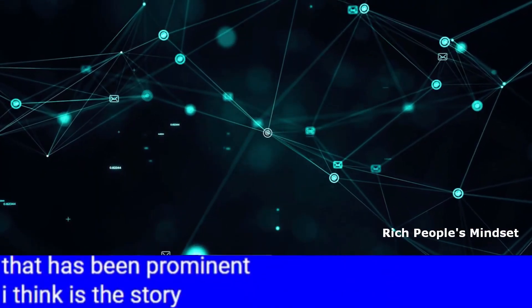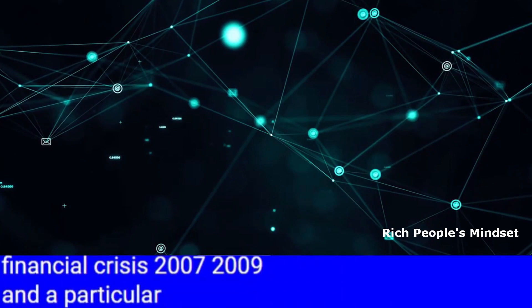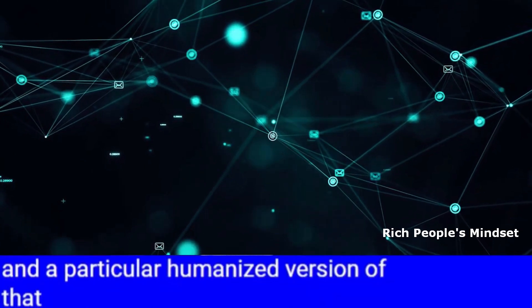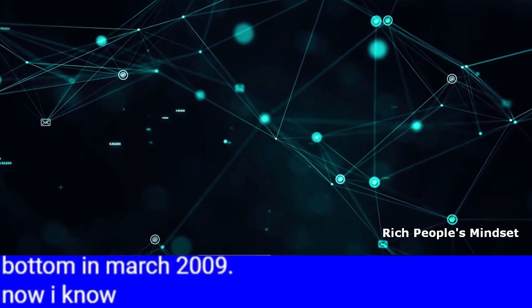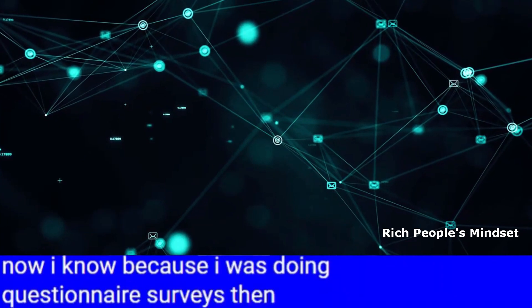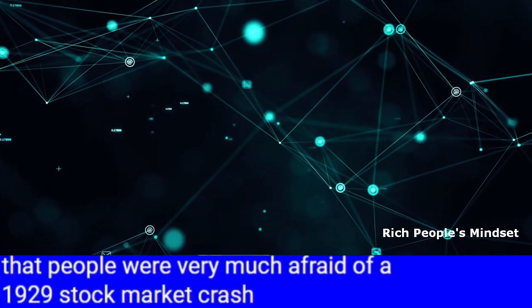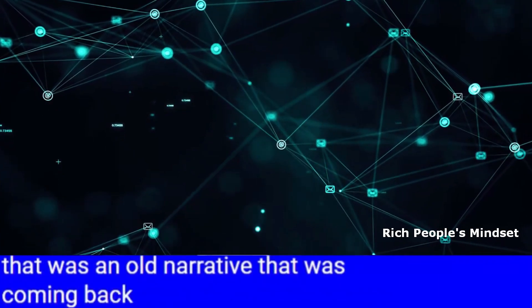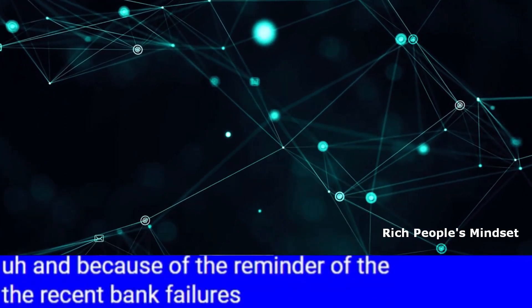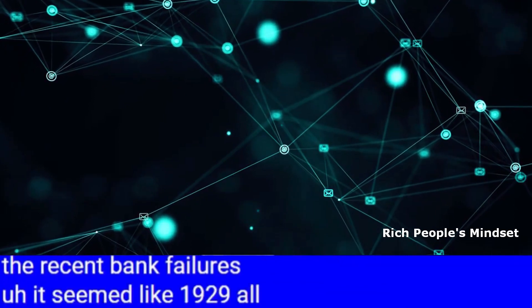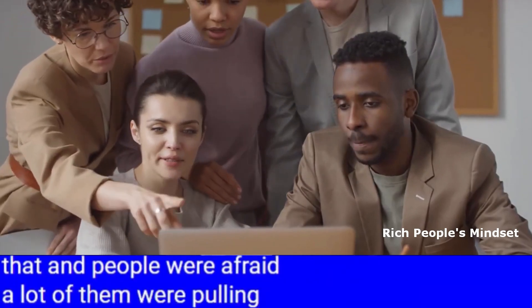One story that has been prominent I think is the story of the previous financial crisis 2007-2009, and a particular humanized version of that about the stock market which reached its bottom in March 2009. I know because I was doing questionnaire surveys then that people were very much afraid of a 1929 stock market crash. That was an old narrative that was coming back and because of the reminder of the recent bank failures, it seemed like 1929 all over again. There was a huge spike in concern about that.